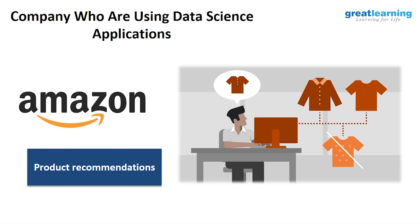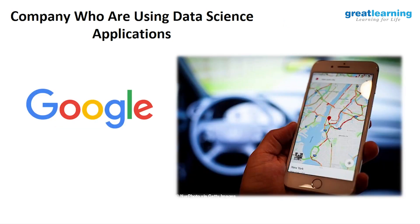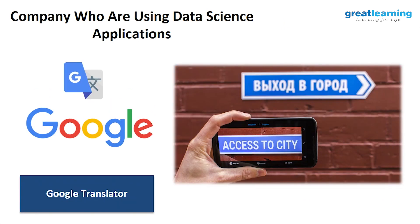Let's see which companies are actually using data science applications. Amazon — when you go on Amazon it shows 'you may also like these products.' We are all familiar with this. They are using a product recommendation system, which also helps them increase their sales. Google Maps is one of the most used data science applications — it tells you where traffic is high and where it is low, so you can manage your timing when traveling. This is also an application of data science.